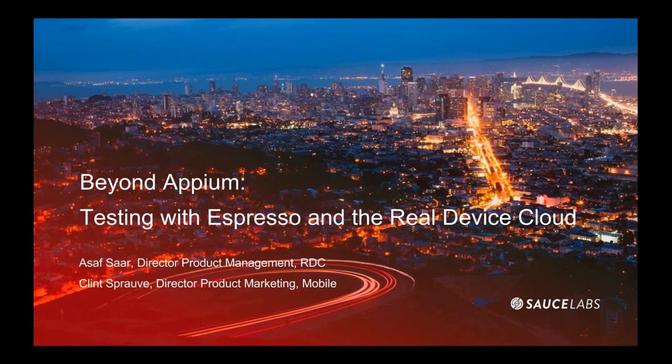Before we get started, I'd like to go over a few items so you know how to participate in today's event. You have joined the presentation listening using your computer speaker system by default. If you would prefer to join over the telephone, just select Telephone in the Audio pane and the dial-in information will be displayed there for you. You will have the opportunity to submit text questions to today's presenters by typing your questions into the questions pane of your GoToWebinar control panel. You may send in your question at any time during the presentation, and we will collect these and address them during a Q&A session at the end.